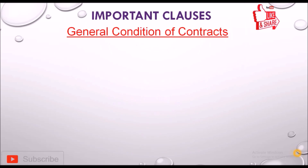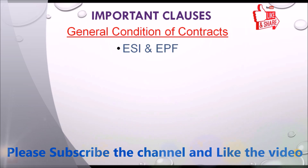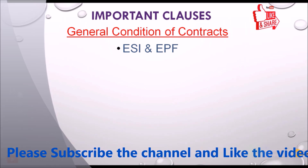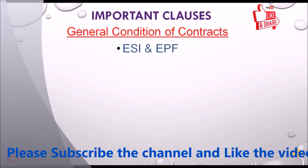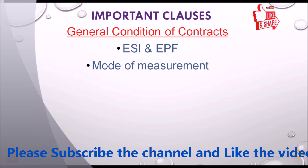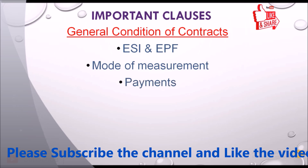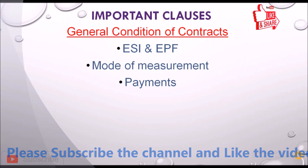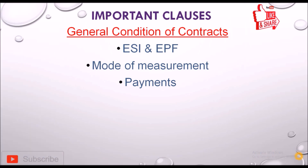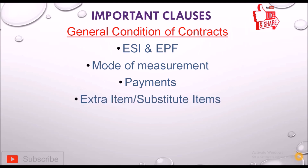ESI and EPF — the contractor is also responsible for Employees' State Insurance (ESI) and Employees' Provident Fund (EPF) contributions. Next is mode of measurement — the method to be followed is described in this clause. Next is payment — how payment will be given, whether any advance payment will be given, how the running account bill payment will be released, and whether any ad hoc payment will be released.